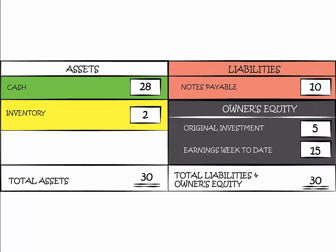Let's review where we were when our previous mini-lecture ended. We created a balance sheet for our lemonade business. The balance sheet tells us that we currently have $28 in cash and $2 in inventory. Total assets are $30. Our notes payable category under liabilities tells us that we still owe $10 to mom and dad. Owner's equity includes our original investment of $5 and our earnings week-to-date of $15 from our first sales event. The right side also totals $30, so we are in balance.